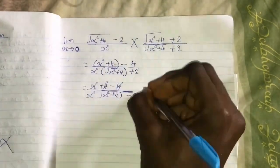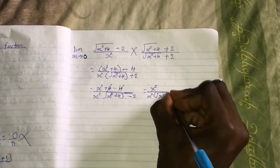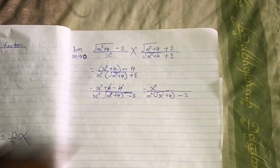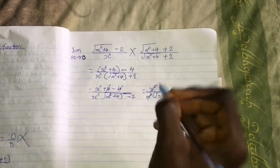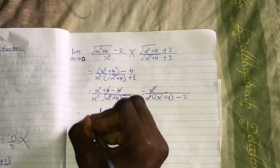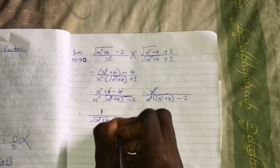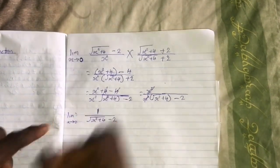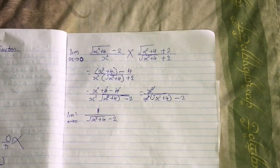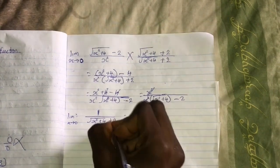So this will cancel this. We are left with x^2/(sqrt(x^2 + 4) + 2). What do you notice here? x^2, you can see x^2. So we are left to put 1/(sqrt(x^2 + 4) + 2) and we are told to limit x to zero, right?